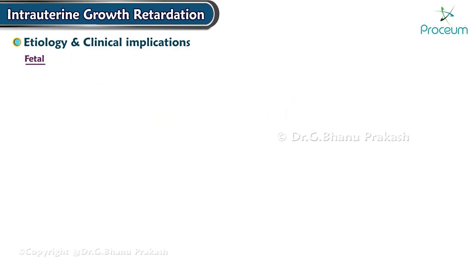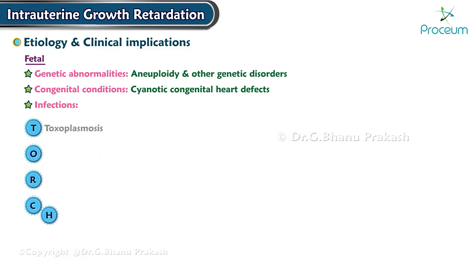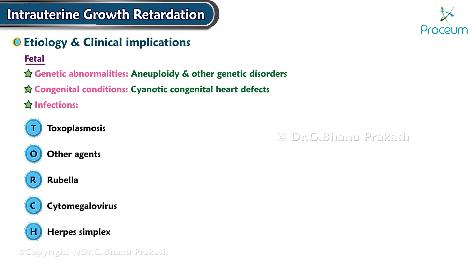Regarding fetal factors, aneuploidy and other genetic disorders can lead to symmetrical intrauterine growth restriction. Cyanotic congenital heart defects are known to adversely affect fetal growth. Early intrauterine infections, notably those classified under the TORCH complex — toxoplasmosis, other agents, rubella, cytomegalovirus, and herpes simplex — can also result in intrauterine growth restriction.